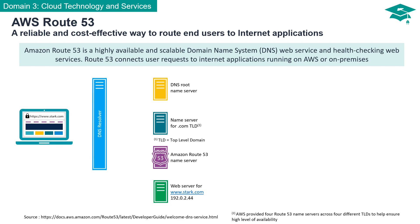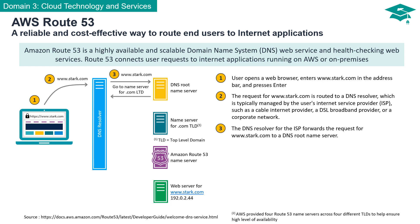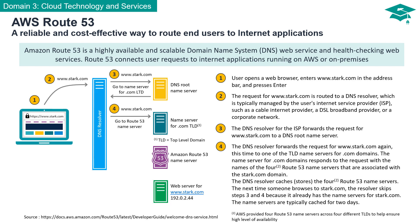Amazon Route 53 is a highly available and scalable Domain Name System web service and health-checking web service. Route 53 connects user requests to Internet applications running on AWS or on-premises. A user enters www.stark.com in their web browser and hits Enter. The request goes to their ISP's DNS Resolver, which forwards the request to a DNS root name server, then to a TLD name server for .com domains. It gets the names of the Route 53 name servers associated with stark.com. The DNS Resolver caches these Route 53 name servers for future use, typically for two days, reducing the need to repeat these steps when others browse to stark.com.